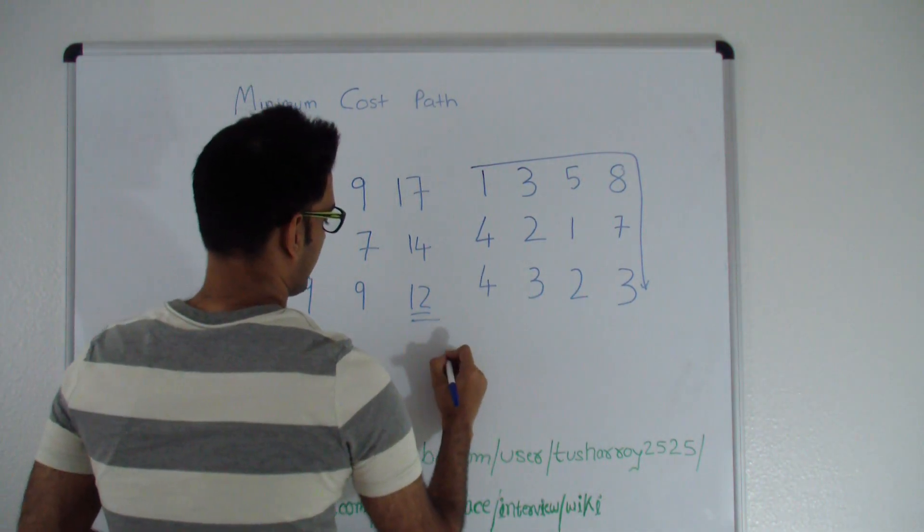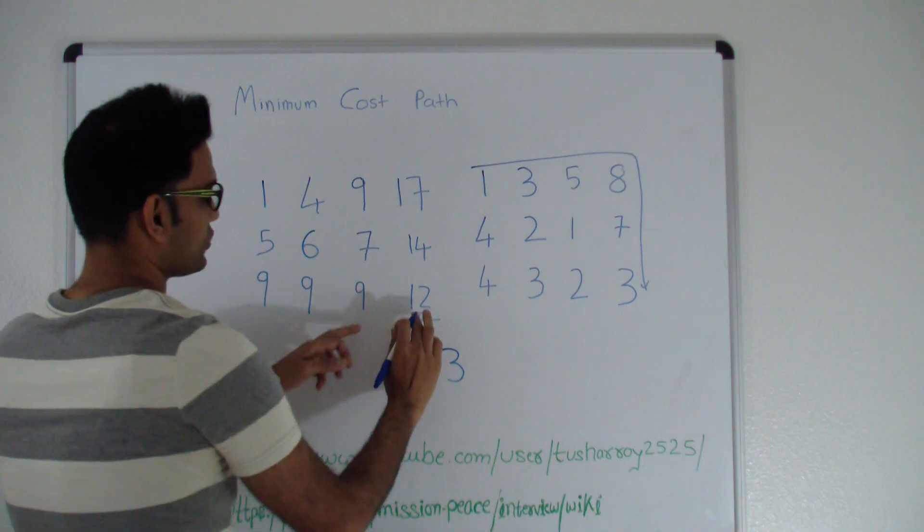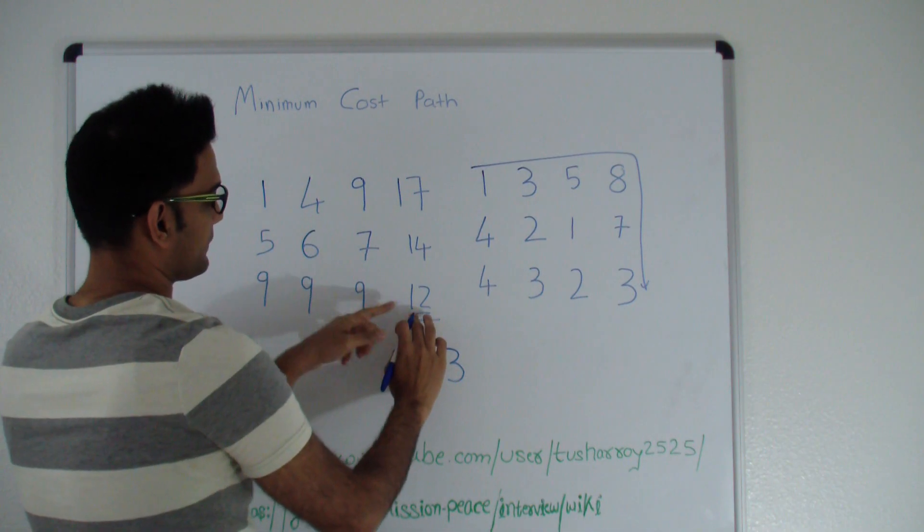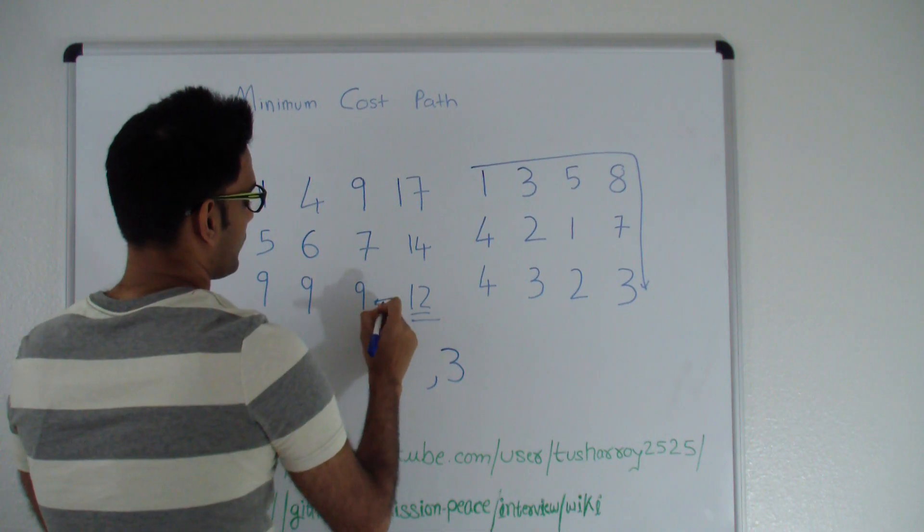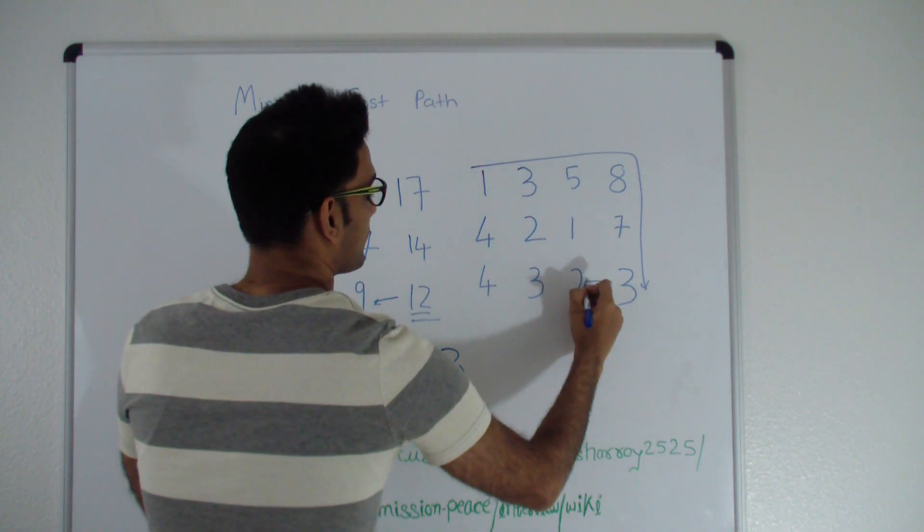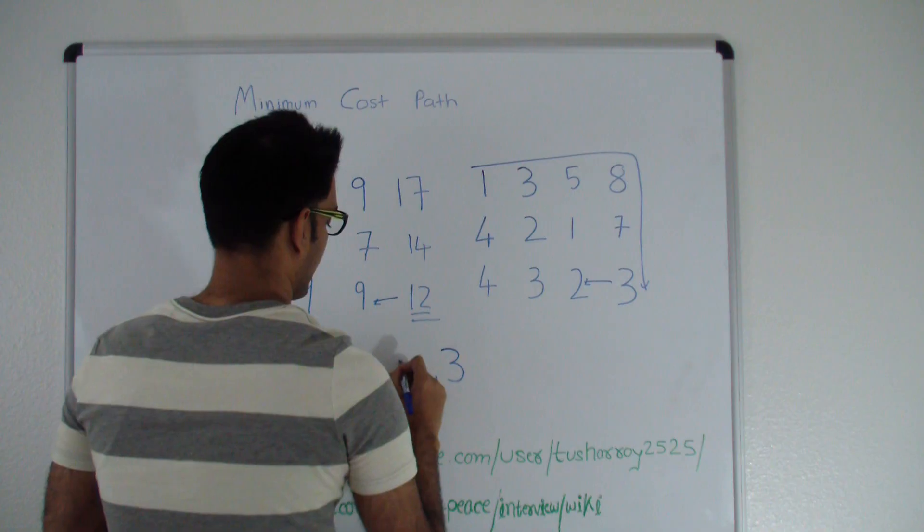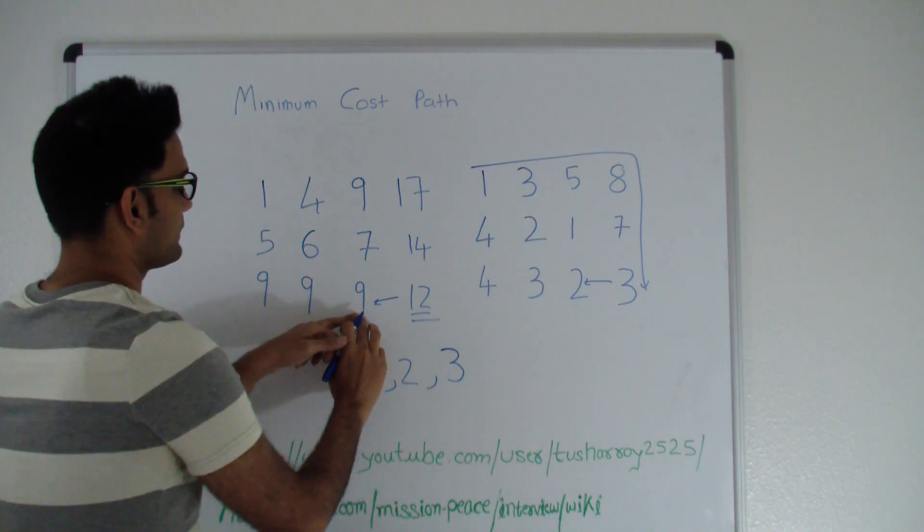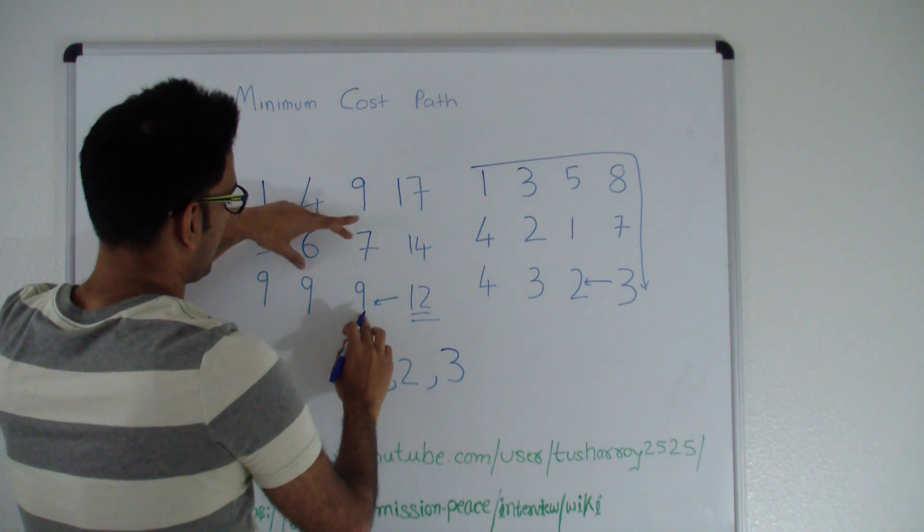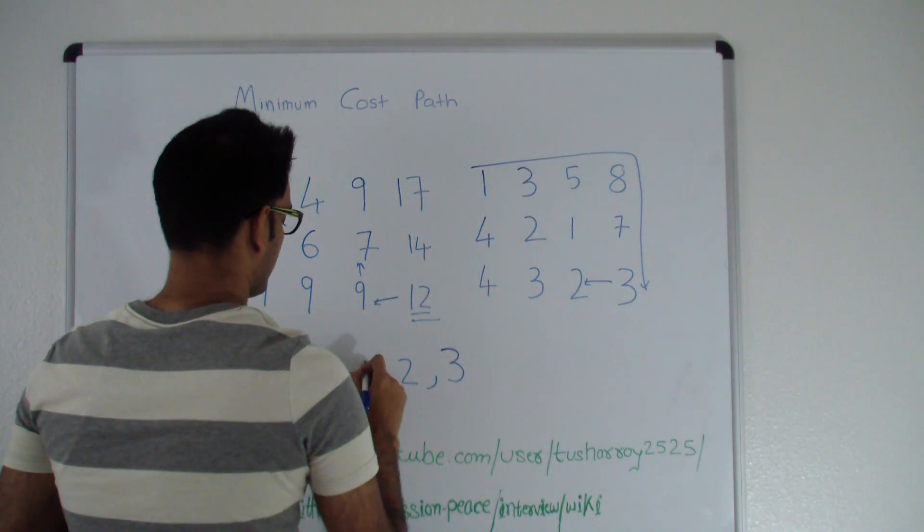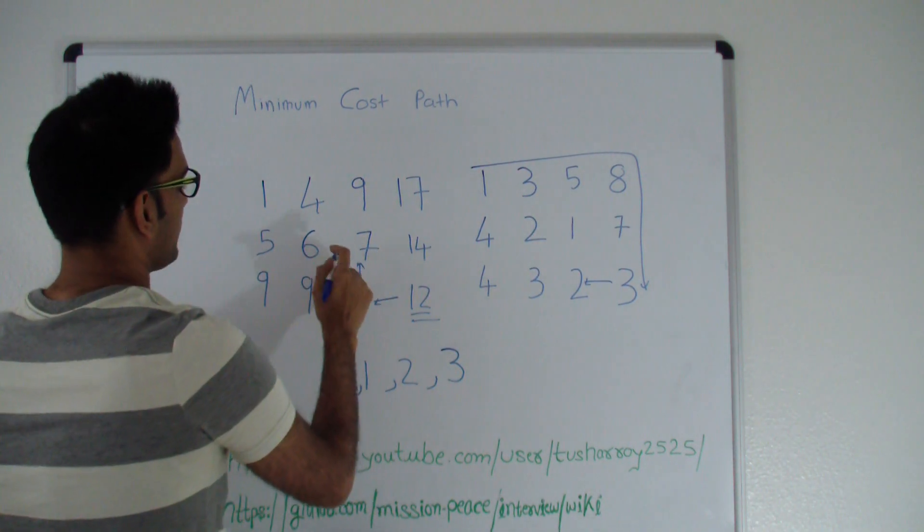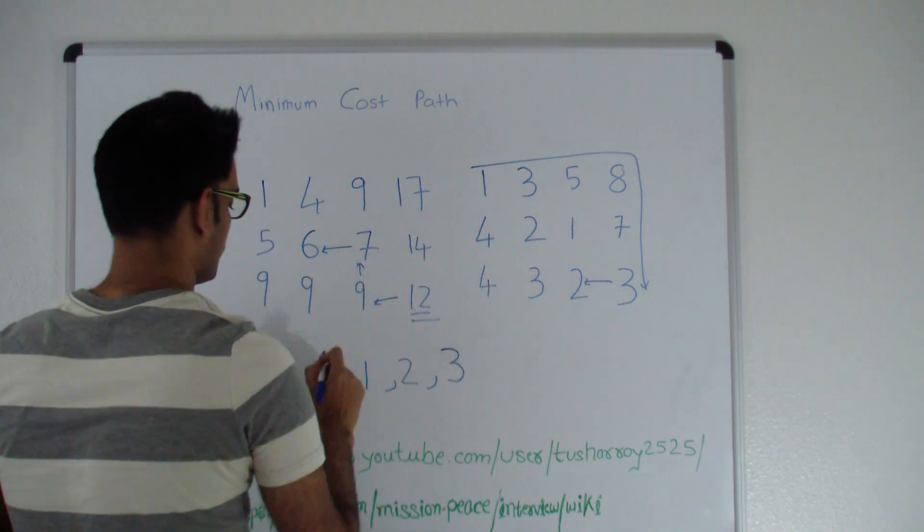We know that 3 is in the answer. Then you check where is this 12 coming from. This is definitely coming from the minimum of the 2, which is this guy. So we come here and we know that 2 is also in the answer. Now where is this 9 coming from? It's coming from the minimum of these 2, which is this guy. So we know that 1 is also in the answer. Where is this 7 coming from? It's coming from here, so 2 is also in the answer.